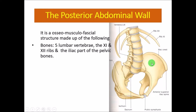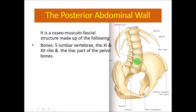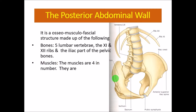Then the iliac part of the pelvic bone. The whole pelvic bone consists of three parts: the ileum, the ischium, and the pubis. Only the ileum part of the pelvic bone is related to the posterior abdominal wall. So the bony components are: the five lumbar vertebrae, the 11th and 12th ribs, and the ileum of the pelvic bone.